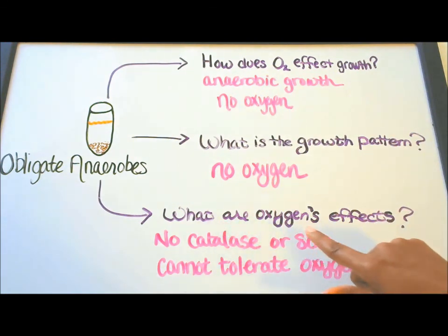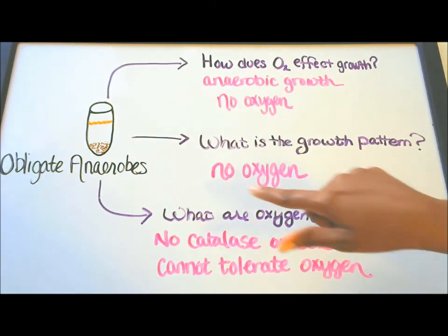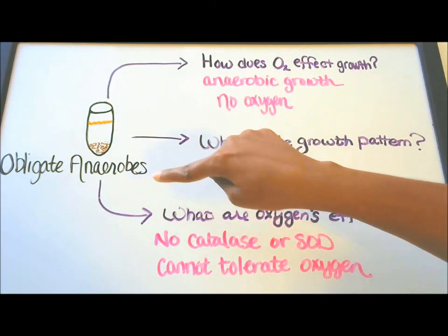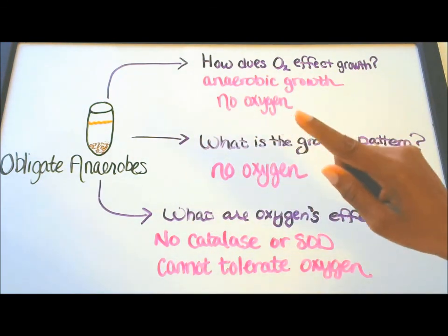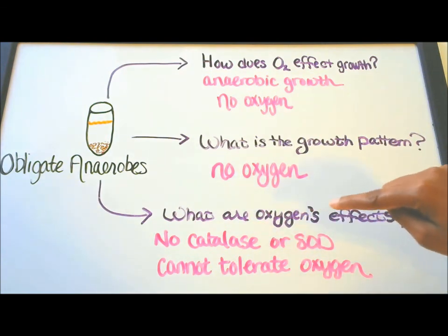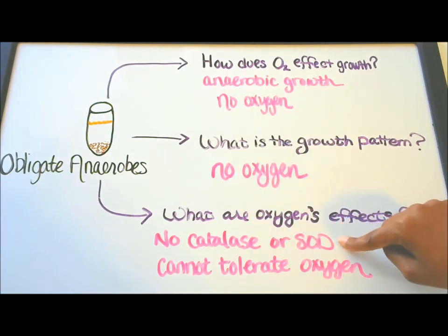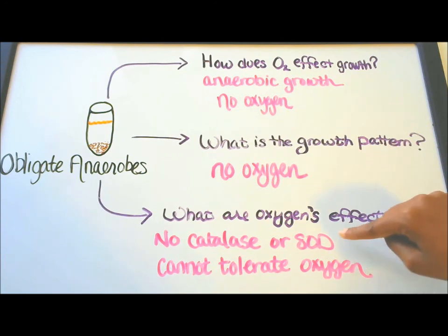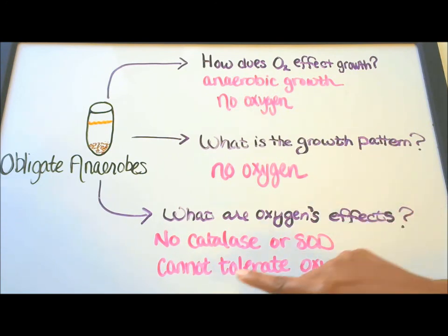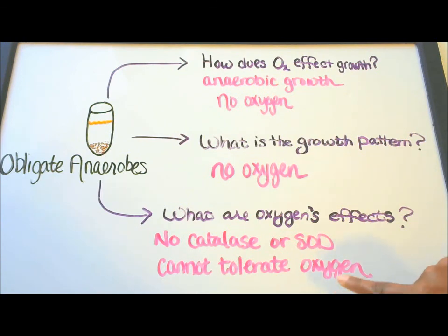What are oxygen's effects on obligate anaerobes? These microbes do not produce catalase or SOD — the enzymes that neutralize toxic oxygens. They also cannot tolerate oxygen at all.